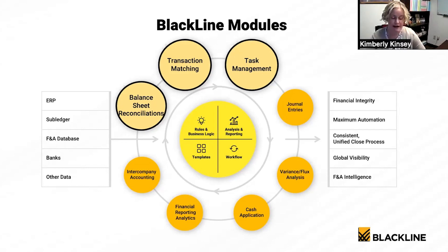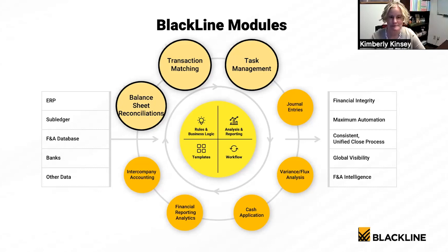I've also used the journal entry module and the task management module for Sarbanes-Oxley at a previous company, as well as the variance and flux analysis module. It's definitely a very robust system. The auto-reconciliation rules and matching engine are the things that allow you to save the most time — they automate reconciliations so they're basically hands-off. Journal entries are created in Blackline and pushed back to whatever your ERP system is, typically done as a phase two.